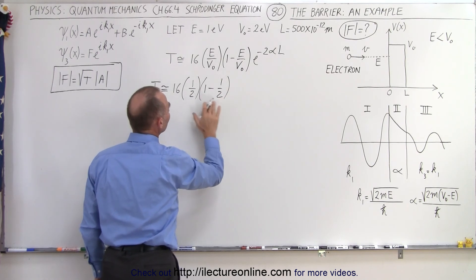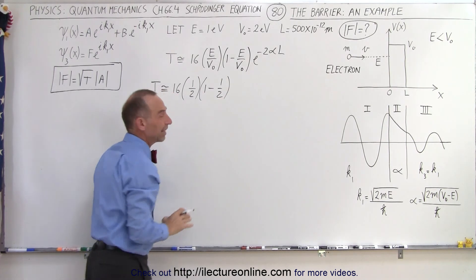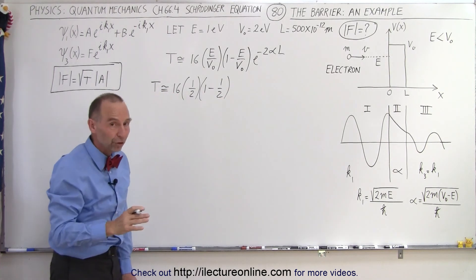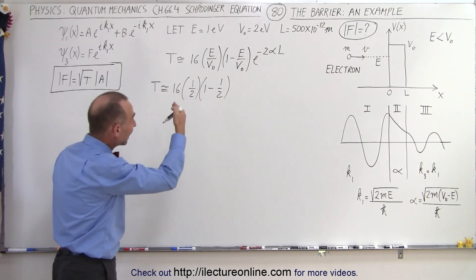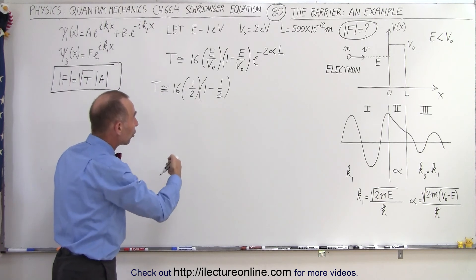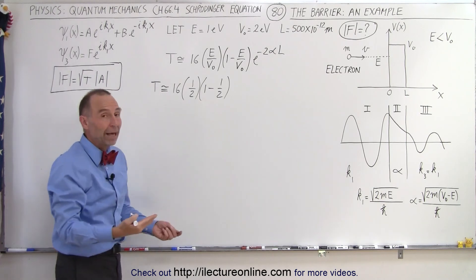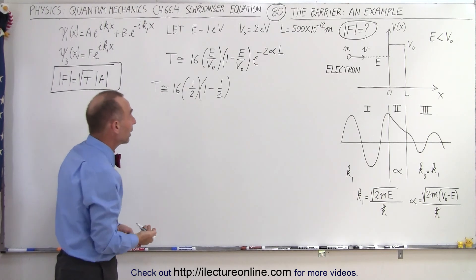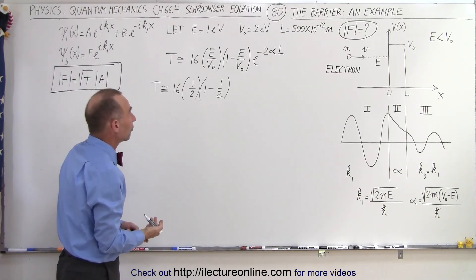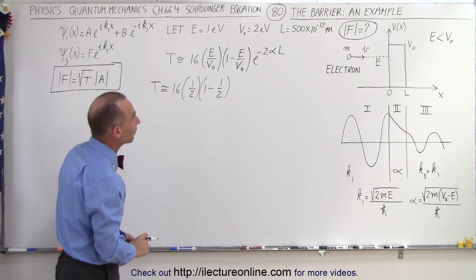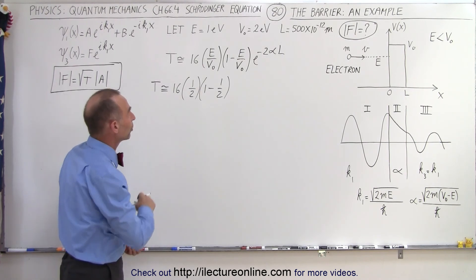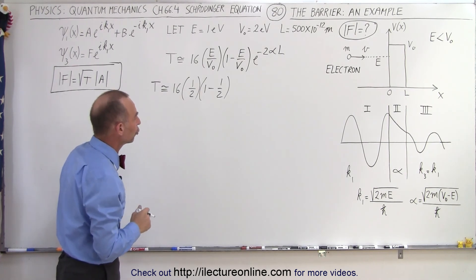Notice that even though the units are electron volts and not standard SI units, since we're taking a ratio it doesn't matter. We can use electron volts directly rather than converting to joules.